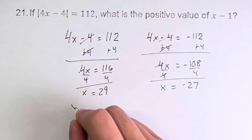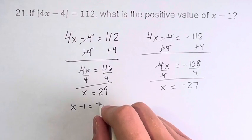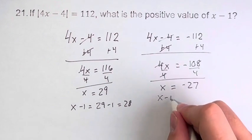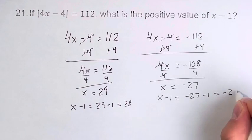So what is the value of x minus 1? Here, x minus 1 is 29 minus 1, which is 28. And here, x minus 1 equals negative 27 minus 1, which is negative 28.